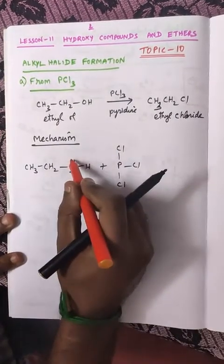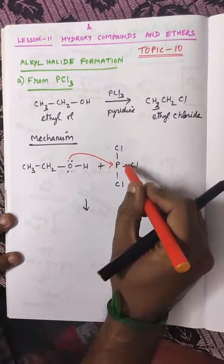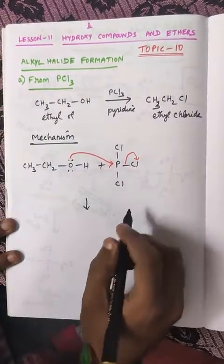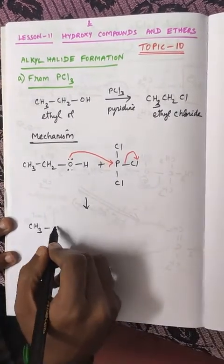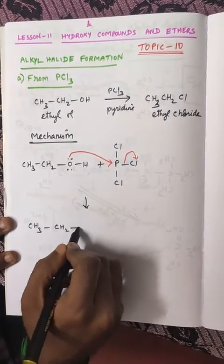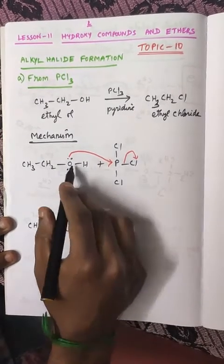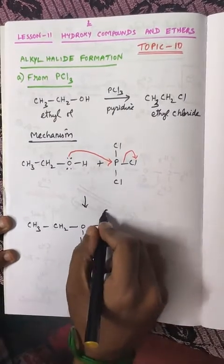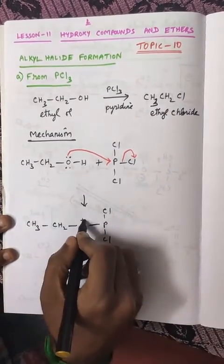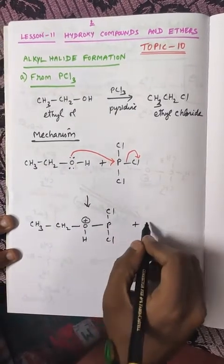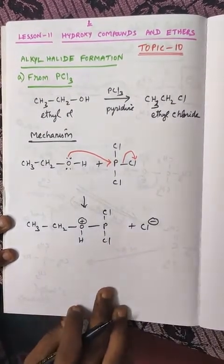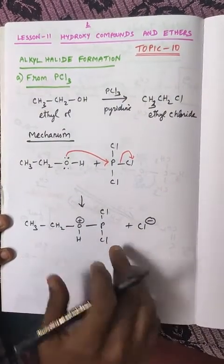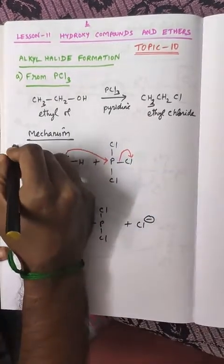When they react together, one of the lone pairs will make a bond with phosphorus. As a result, the bond of one chlorine will shift over the chlorine to form chloride ion. So CH3-CH2-O-H-P with two chlorine atoms. The oxygen will get a positive charge plus Cl minus chloride ion. This is step one.